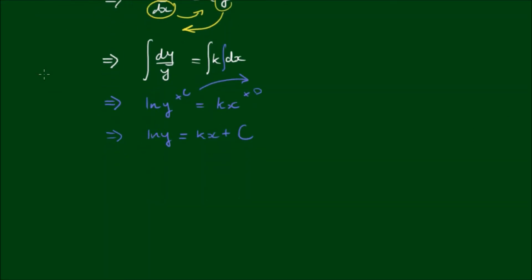To get y on its own I somehow have to cancel this log and the only way I can do that is to exponentiate the right hand side. So what I do is I write e and then raise it to the log of y, and if I do that on the left hand side I have to do that to the right hand side as well.